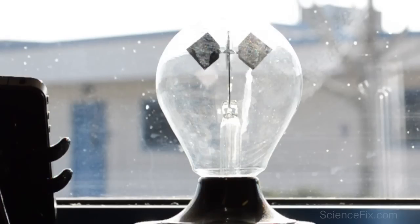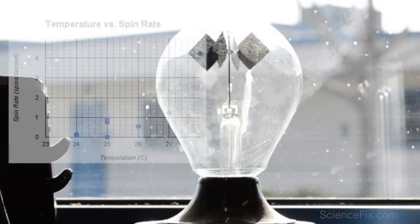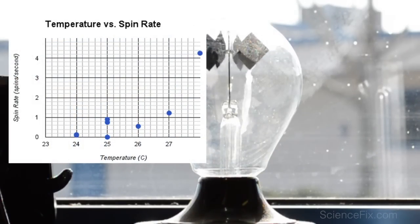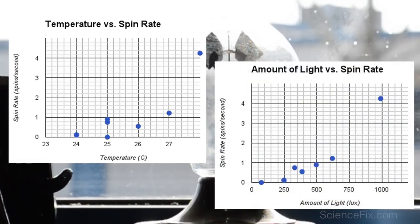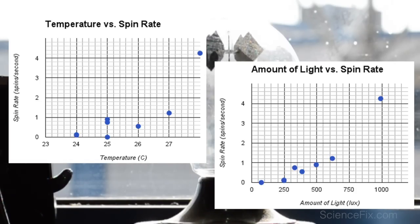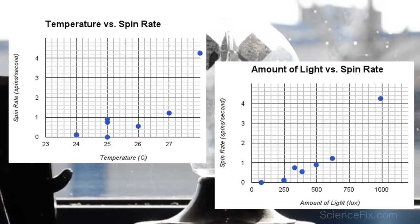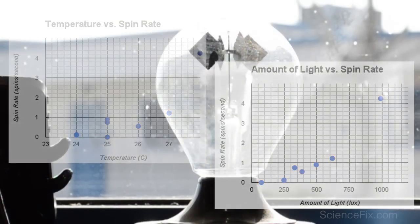So my students wonder: is it the temperature or is it the amount of light that's affecting the spinning rate of the radiometer? Here's the temperature data — we have a low of 24 degrees Celsius and a high of around 28 degrees, and the spinning rate goes from 0 to 4. And we can see that the light dramatically increases from less than 100 lux all the way up to close to 1,000 lux. What do you think? Which one is the factor that determines it? Is it one or the other, or do both play a role?